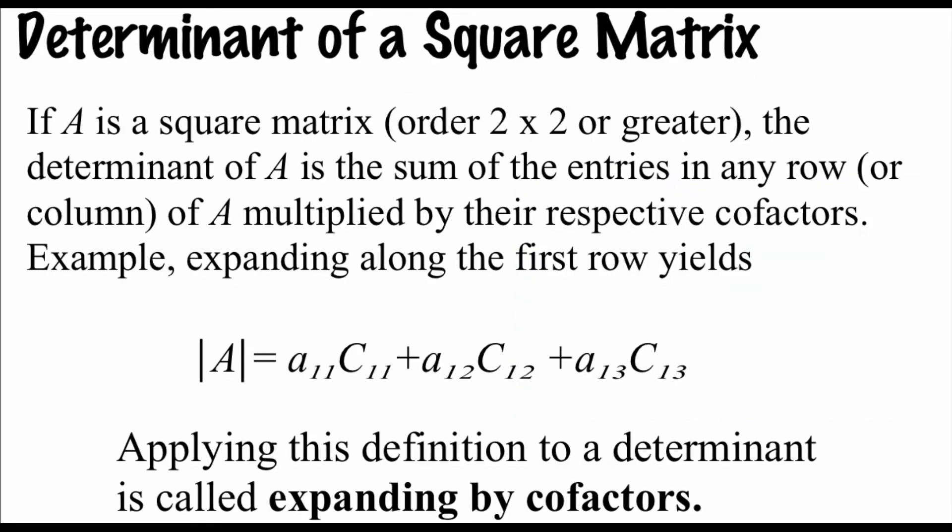So if we're dealing with a square matrix of order 2 by 2 or greater, then what we can do in order to find the determinant of the matrix is we can grab any row or any column we want to and multiply those entries by their cofactors and then add those things together. So for example, if we were looking at the first row of a 3 by 3 matrix, we could grab each individual entry, so the A11 entry, the A12 entry, and the A13 entry.